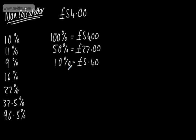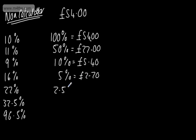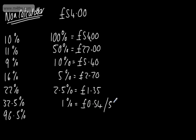5% is half of 10%, so that's half of £5.40, which is £2.70. Looking ahead, I can find 2.5%, which is half of 5%, giving £1.35. For 1%, that's one-tenth of 10%, which gives us 0.54, or 54p.